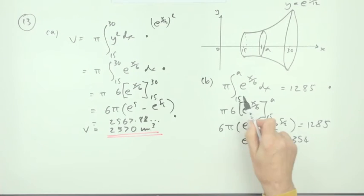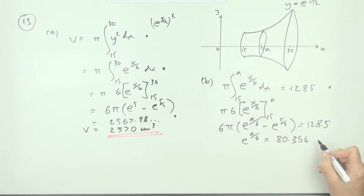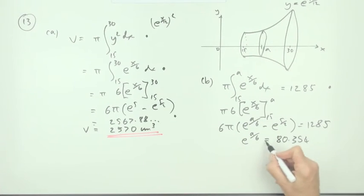The marks for this part: that'd be the first mark for forming an integral up to a certain value that gives you half the volume. The second mark is for getting this equation, getting it down to e to that. And the last mark will be for finding the final answer.